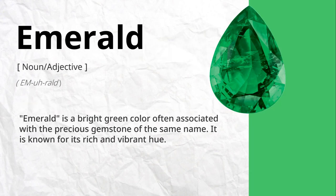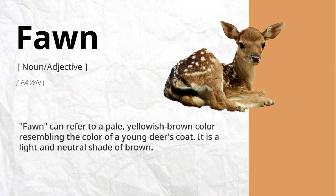Emerald is a bright green color often associated with the precious gemstone of the same name. It is known for its rich and vibrant hue. Fawn can refer to a pale, yellowish-brown color, resembling the color of a young deer's coat. It is a light and neutral shade of brown.